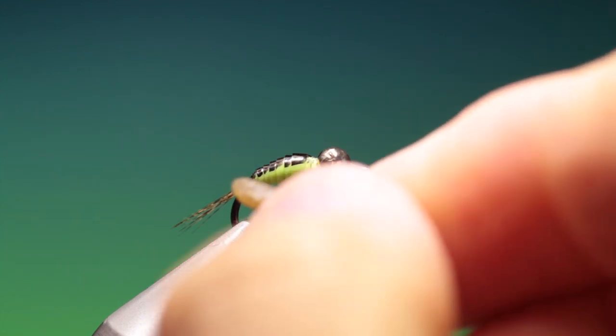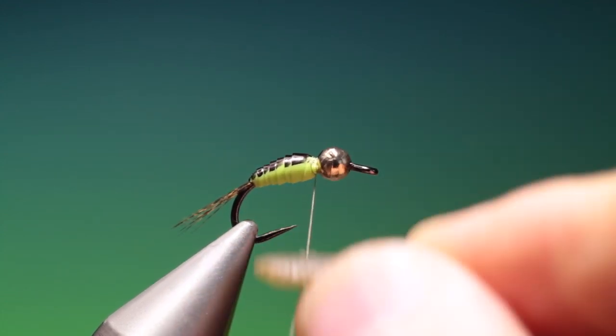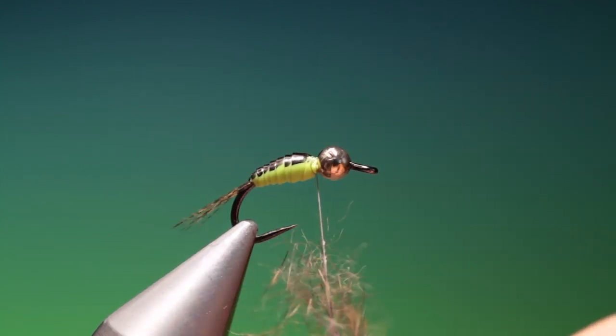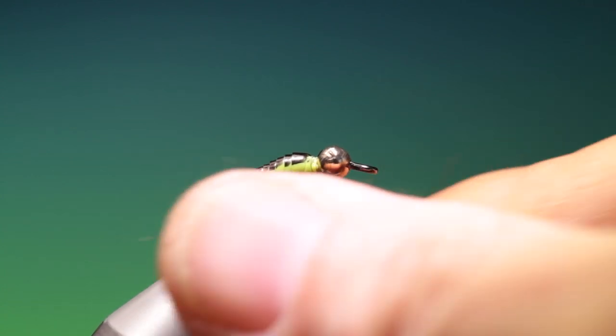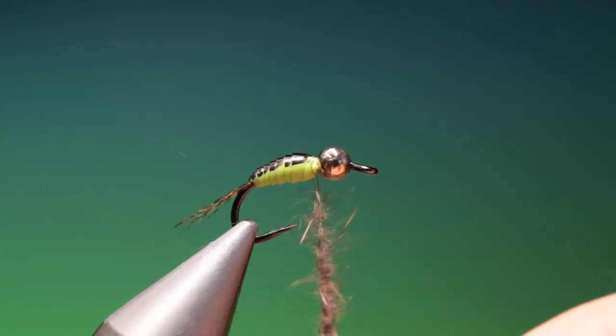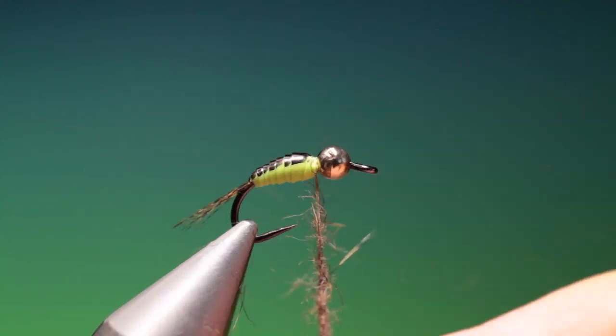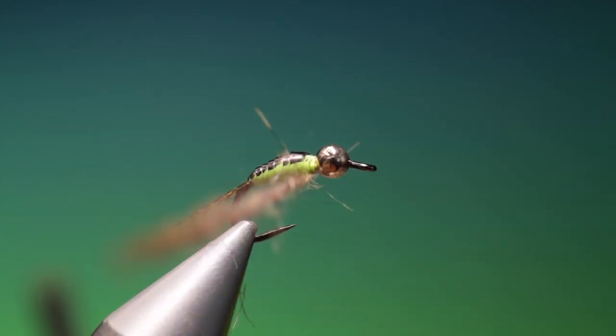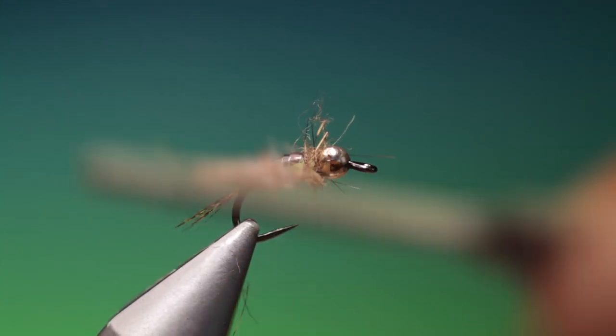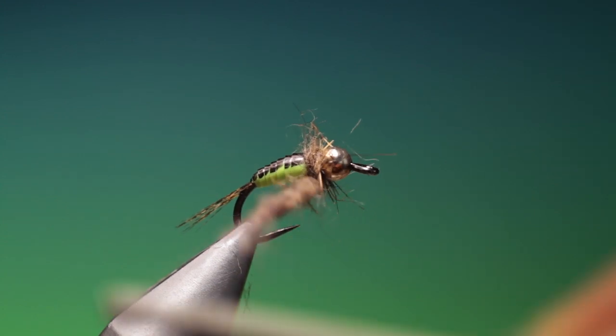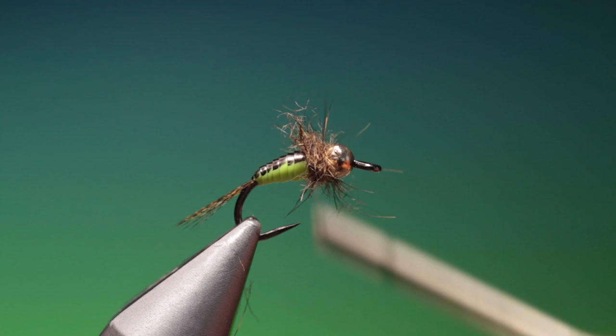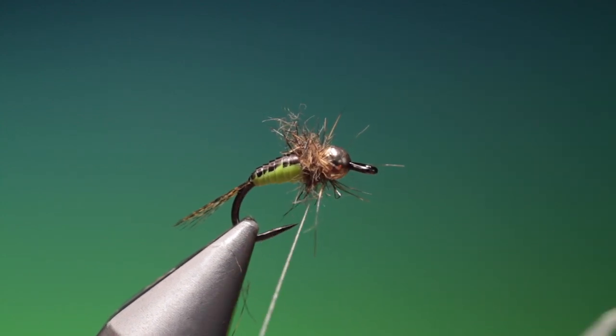I need a little bit of wax. Some hairs ear dubbing. This wants to be spiky. Just make our collar. I like to put more on. You can pull it out afterwards.